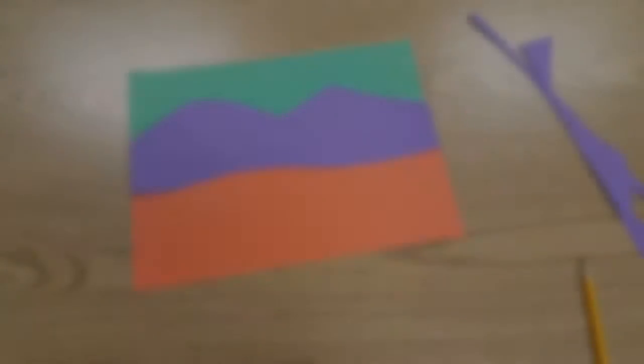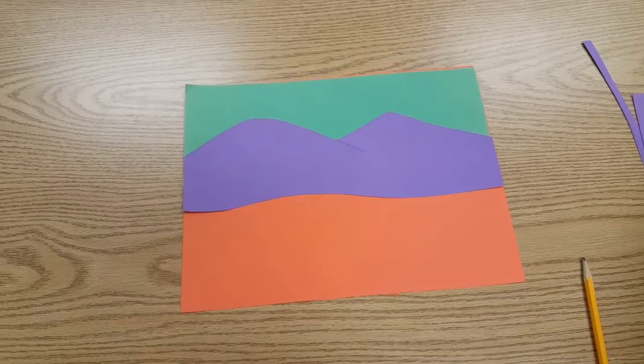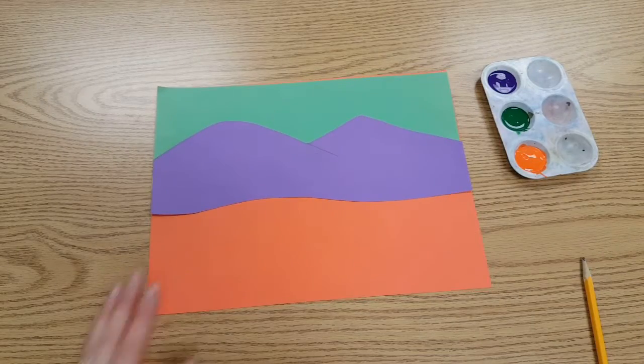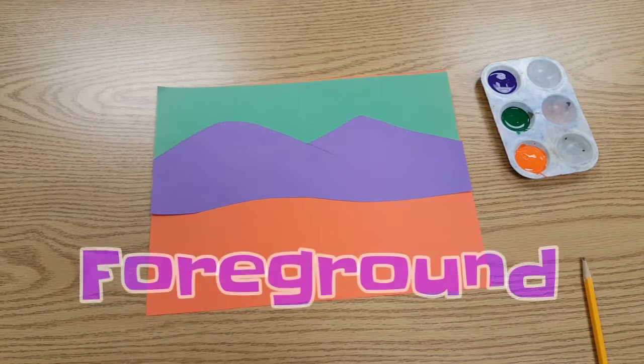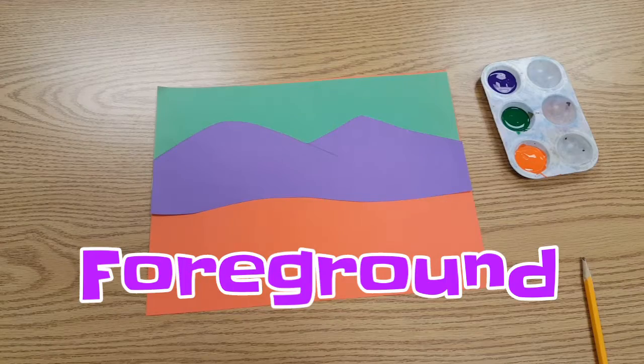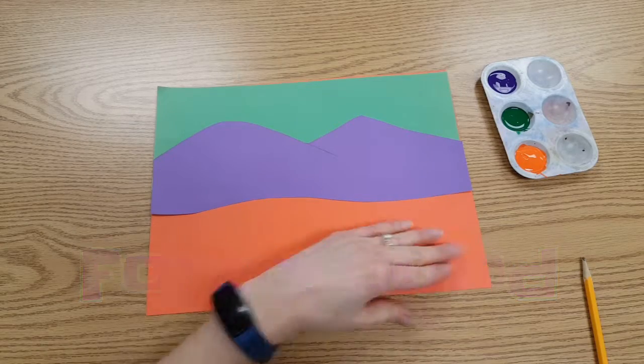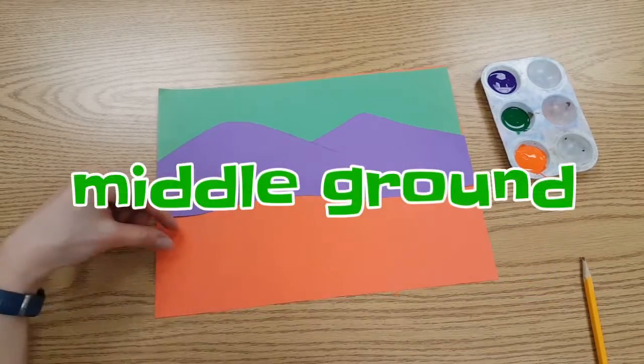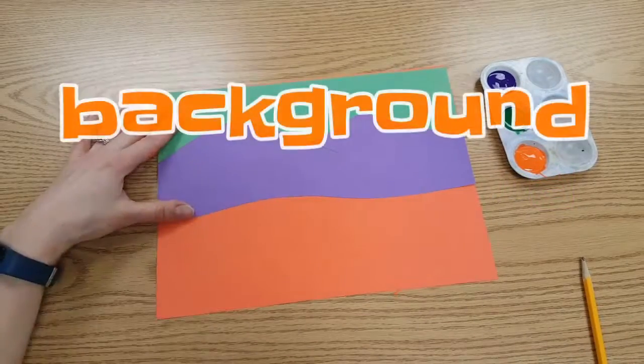Once your background has been established, we need to add some objects in the foreground. This would be the area that's closer to us. Foreground is up front, middle ground is in the middle, background is at the back.